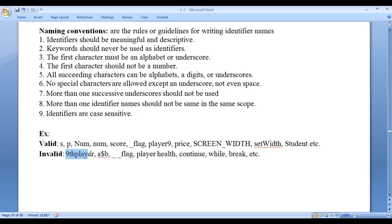You can see ninth_player is an invalid identifier because it begins with a number. All succeeding characters can be alphabets, digits, or underscores. After the first character, next characters can be alphabets, digits, or underscores. No special characters are allowed except underscore, not even space.